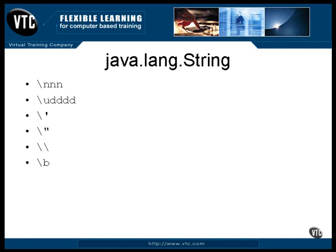A backslash-b will be translated into the backspace character. Backslash-f is a form feed. Backslash-n is the newline character, which usually translates into a line feed character. Backslash-r is a carriage return. And finally, backslash-t is the tab character.